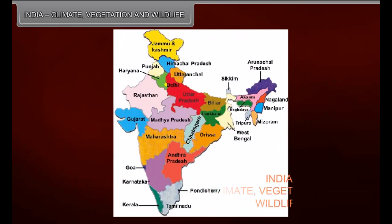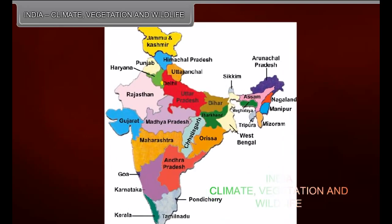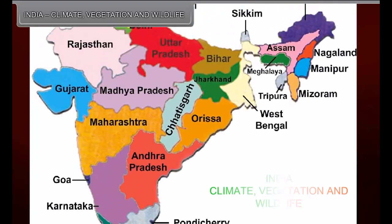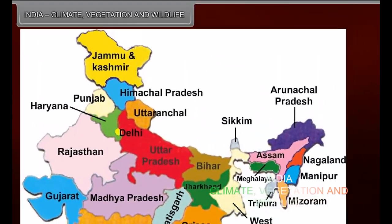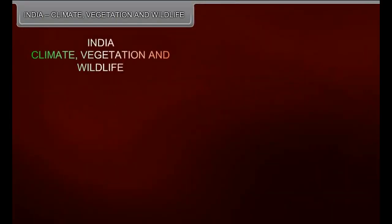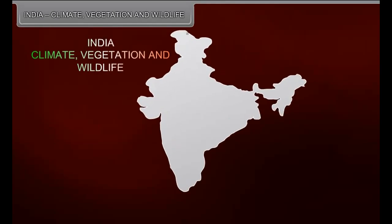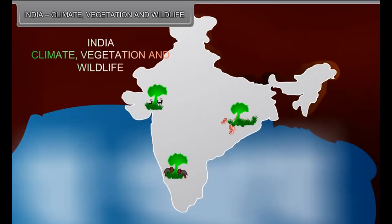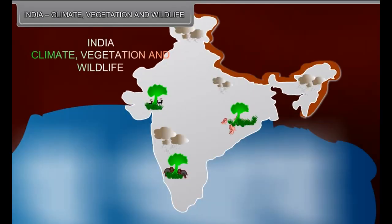India is a large-sized country with a variety of relief features. The vast size, varied relief features, latitudinal extent, proximity to the sea, and the direction of monsoon winds are the important factors which affect the climate of India.